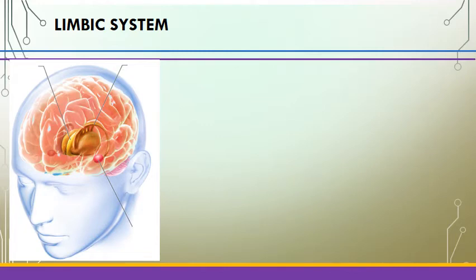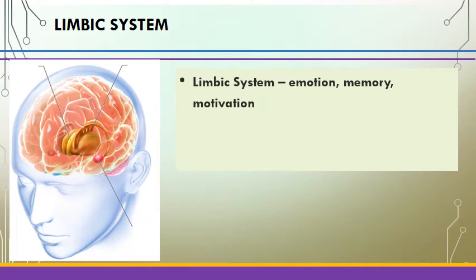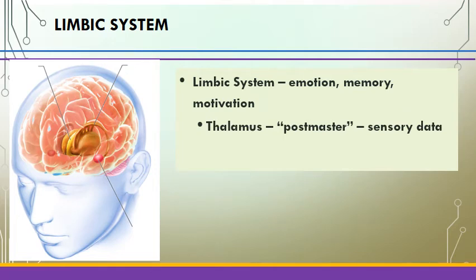Just above the brain stem is a more complicated set of structures known as the limbic system. The limbic system's job is basically to cover emotion, memory, motivation, and human regulation processes like thirst and hunger. Though some neuroscientists have been arguing recently that we should get away from the idea that this set of structures belongs together as a separate system. Regardless, one of the key structures in this area is the thalamus, which is a sort of UPS guy for your brain — it handles all sensory input except for smell.